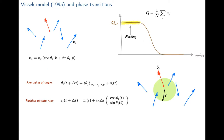In the Vicsek model, I think of all active particles — birds, for simplicity — as arrows representing velocity vectors. Each bird moves in a direction given by this velocity vector: v = v₀(cos θ, sin θ), a constant speed v₀. Position evolves simply as r(t + Δt) = r(t) + v·Δt. For the angle θ, I define a neighbor interaction: I draw a circle of radius R around particle i, and average the angles of all neighbors inside that circle to get the new angle.